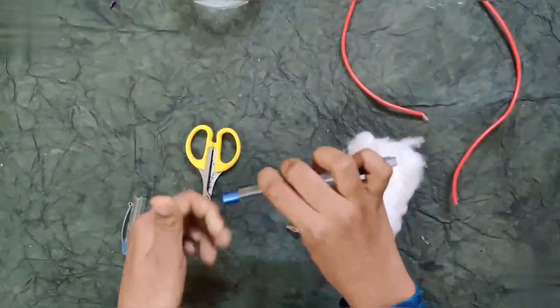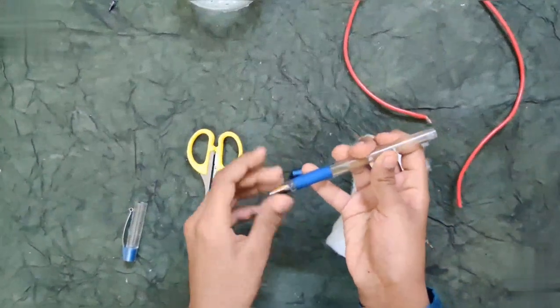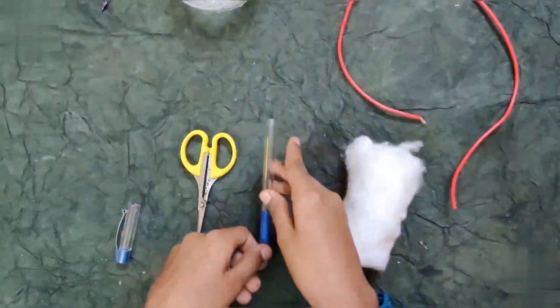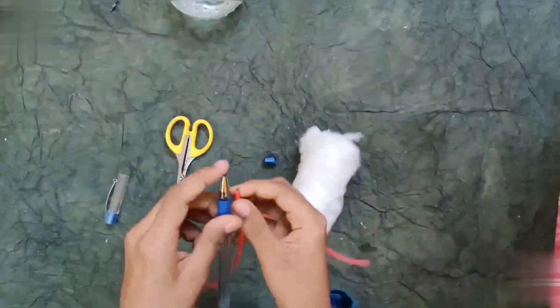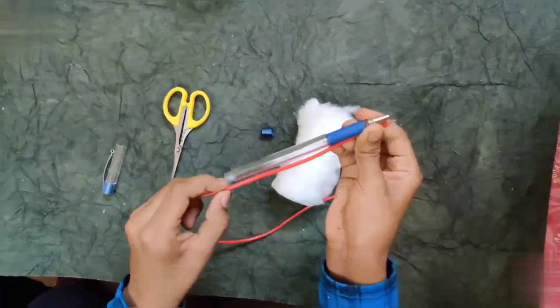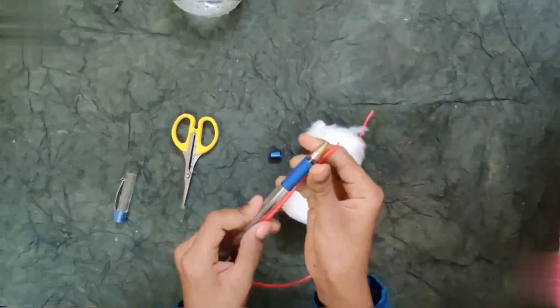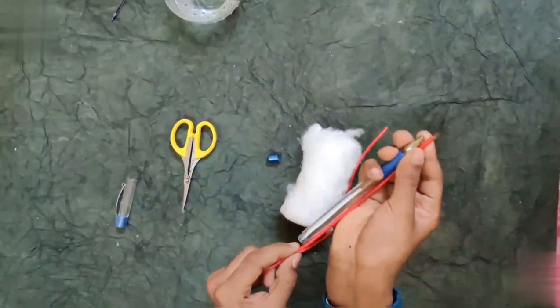Then, I will take the bottom part and place it here. Then, we should cut this electric wire. Take the length of this pen. For me, the pen is here. See, the length should be here, above the pen.